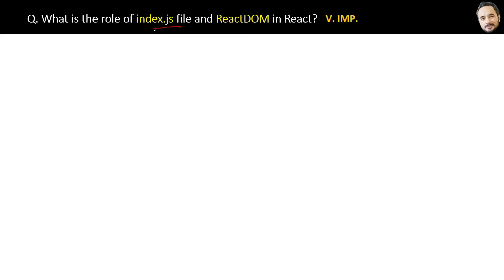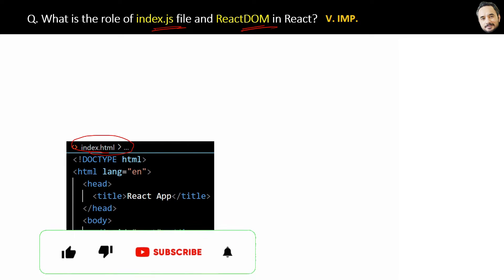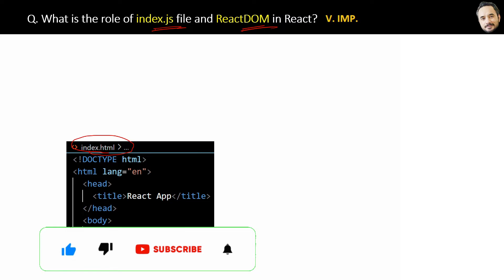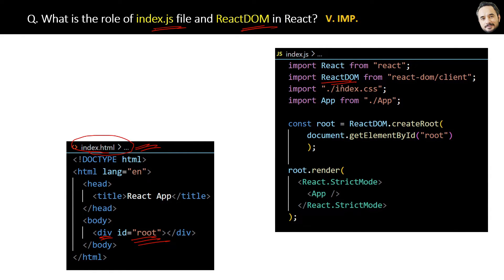What is the role of the index.js file and ReactDOM in React? We already know that we have the index.html file with a div element with id equal to 'root' inside it. When you run your React application, React libraries will load the index.js file along with index.html. In the index.js file, the react-dom library is imported at the top from the react-dom/client library. You can also expand the node_modules folder and find this library there.